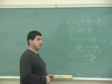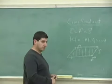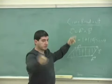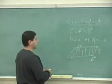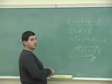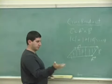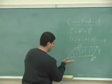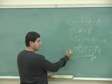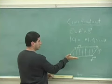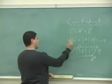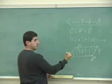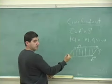The direction of vector C — vector C is actually a third vector — is given by the right-hand rule. So let's practice the right-hand rule now. A crossed into B: you turn your fingers in the direction of B, and your thumb is the direction of vector C.